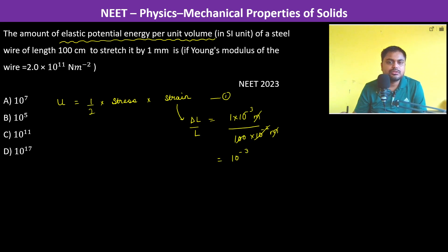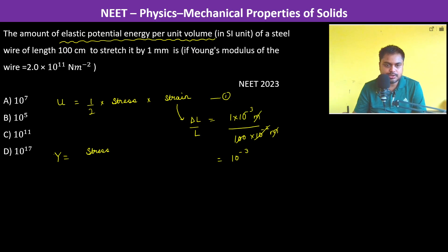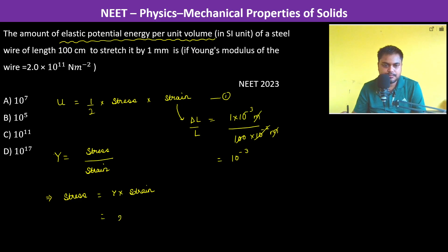For stress, we don't know it directly, so let us find it using the formula: Young's modulus equals stress divided by strain. Therefore, stress equals Young's modulus into strain, which is 2×10¹¹ N/m² multiplied by strain 10⁻³, giving 2×10⁸ N/m².